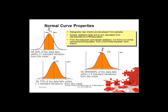For normal curve properties: histograms and charts are developed from samples. Sample statistics — X-bar and S — are calculated from representatives of the population. From the histogram and sample statistics, we form a curve that represents the population from which these samples were drawn. 68.26% of the data falls within plus or minus one standard deviation from the mean. 99.73% of the data falls within plus or minus three standard deviations from the mean. And 99.999998% of the data falls within plus or minus six standard deviations from the mean.